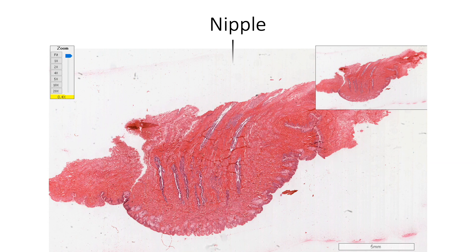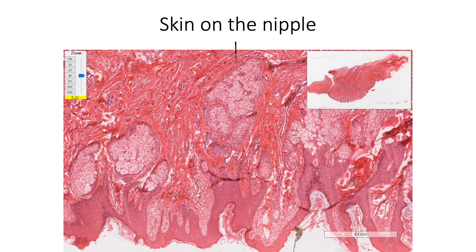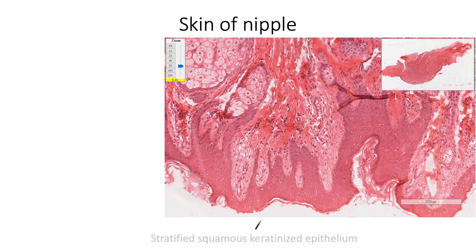The nipple projects from the center of the breast on its anterior aspect. Its level varies with age, size and shape of the breast. It is covered by pigmented thin skin, and pigmentation increases after first pregnancy. The epidermis, as elsewhere, is made up of stratified squamous keratinized epithelium.